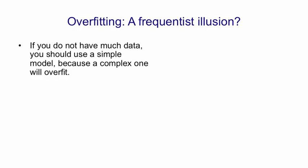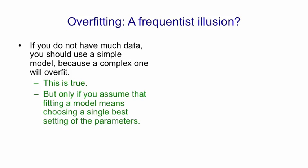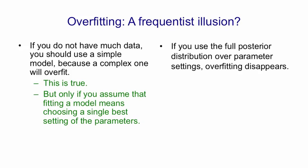So a frequentist would say, if you don't have much data, you should use a simple model. And that's true. But it's only true if you assume that fitting a model means finding the single best setting of the parameters. If you find the full posterior distribution, that gets rid of overfitting.